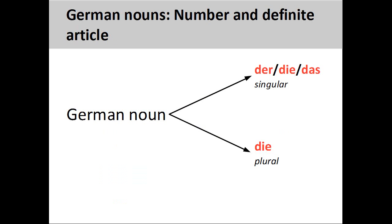Let's now apply what we learned about personal pronouns to German nouns. You will recall from the presentation on German nouns that the grammatical gender of a noun is seen in its definite article. Der indicates a masculine noun, die a feminine noun, and das a neuter noun.